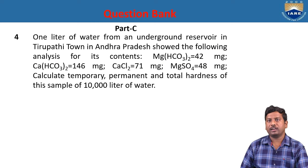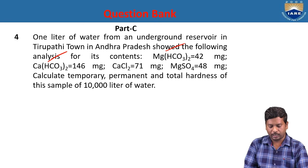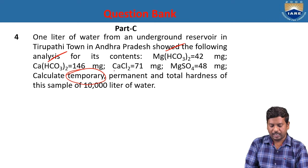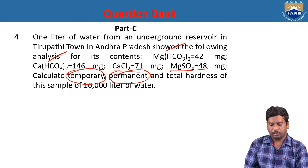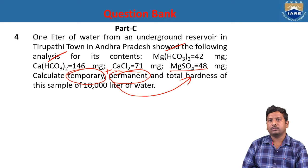Problem 4: One liter of water from an underground reservoir in Theravati town, Andhra Pradesh contains: magnesium bicarbonate 42 mg, calcium bicarbonate 146 mg, calcium chloride 71 mg, magnesium sulfate 48 mg. Calculate temporary, permanent, and total hardness for 10,000 liters. Magnesium bicarbonate and calcium bicarbonate cause temporary hardness; calcium chloride and magnesium sulfate cause permanent hardness. Total hardness equals temporary plus permanent hardness, calculated using the calcium carbonate equivalence formula.